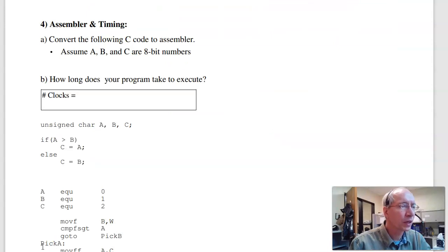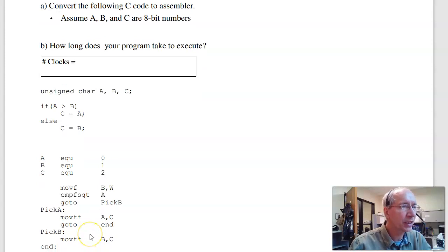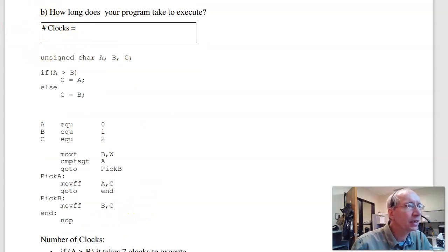Problem 4 looks at generating the function C equals the maximum of A and B in assembly. So here's the C code. In assembly, I could do that by first checking, is A greater than B? Move B to W. Compare skip if greater than - if A is greater than B, skip. So if I skip, I go down here. Move A to C, then jump to the end. Otherwise, I don't skip and move B to C, go to the end. So that's the function A greater than B.